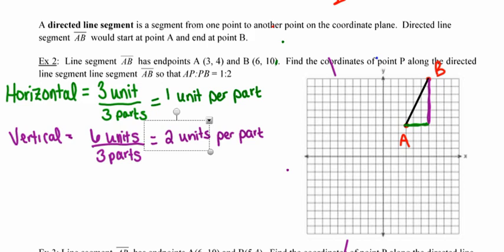So now in the horizontal, I've got one unit per part, and in the vertical direction, two units per part. Since these are nice whole numbers, I can start at point A and move one unit to the right, two units up. Move another unit to the right and two units up. Move another unit to the right and two units up. And I've successfully divided line segment AB into three equal parts. Now the only decision I have to make is where to put point P such that the ratio is 1 to 2.